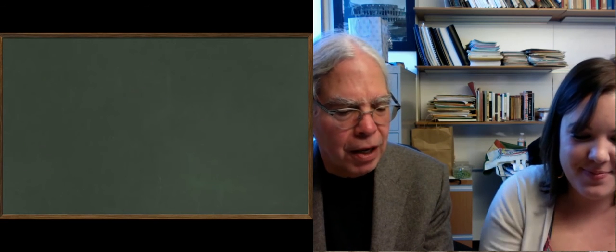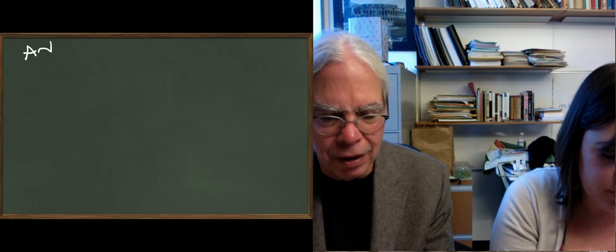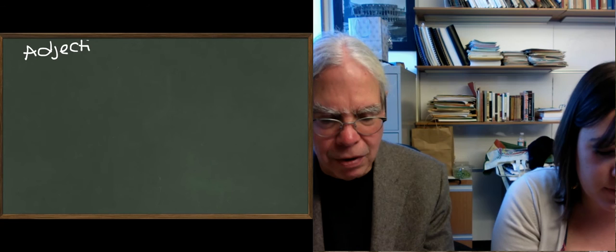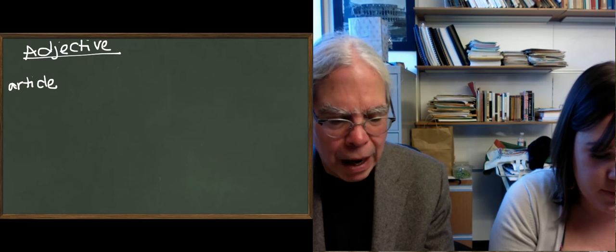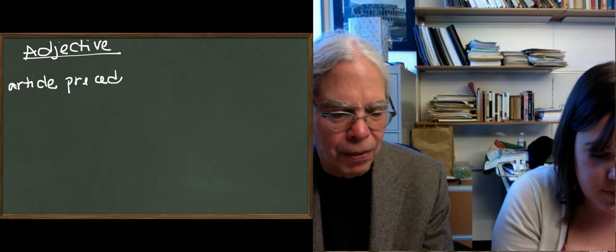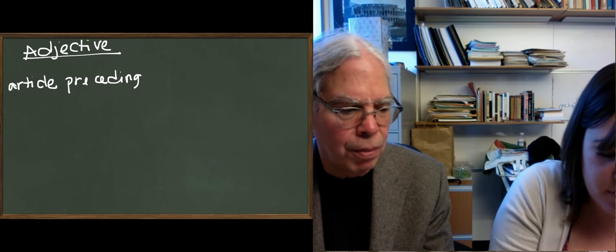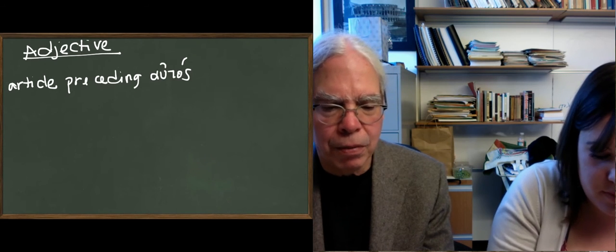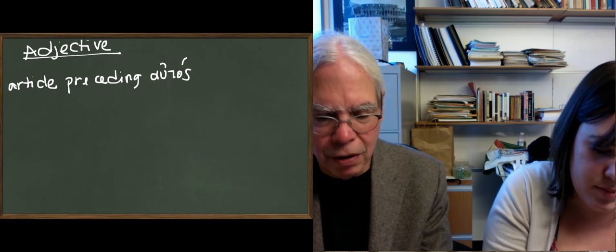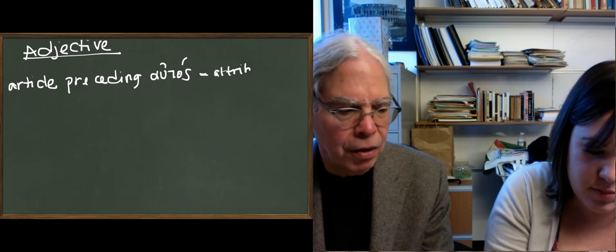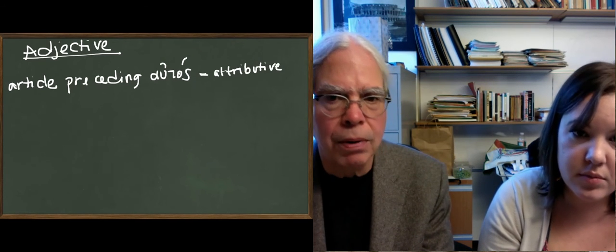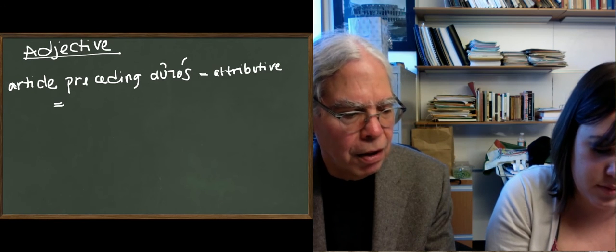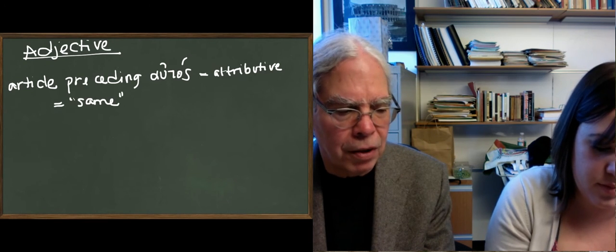Let's go back to the second screen. If autos is an adjective, it can be either in a distributive or predicative position. If there's an article preceding the form of autos and no noun in between, then it's in an attributive position. If it's in an attributive position, it means same.